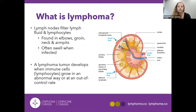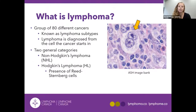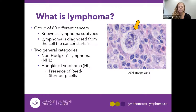Lymphatic cancer occurs when these immune cells or lymphocytes grow in an abnormal way or at an out-of-control, very fast rate. Lymphoma is actually an umbrella term that covers 80 different related cancers, known as the lymphoma subtypes. Lymphoma is characterized and ultimately diagnosed from the cell that your cancer starts in, and there are many different subtypes because there are many different types of cells in your lymphatic system.